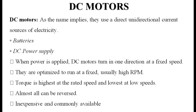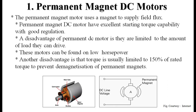The first type is PMDC — the Permanent Magnet DC motor. The permanent magnet motor uses a magnet to supply field flux. PMDC motors have excellent starting torque capability with good speed regulation. A disadvantage is they are limited in the amount of load they can drive; these motors are found in low horsepower applications. Additionally, torque is usually limited to 150% of rated torque to prevent demagnetization of the permanent magnets.